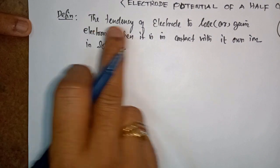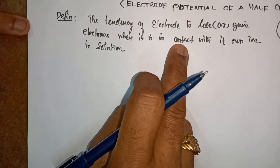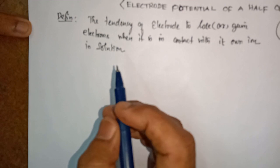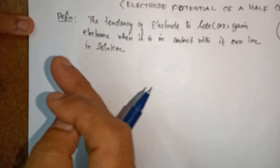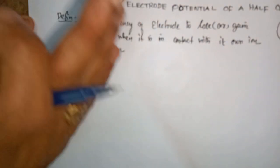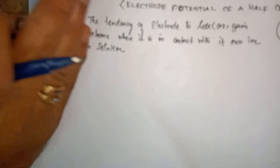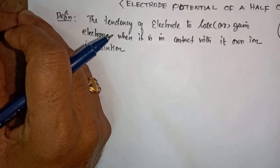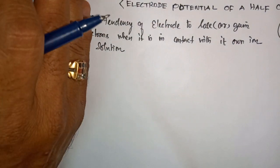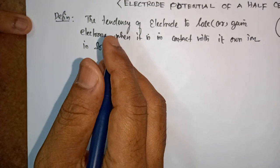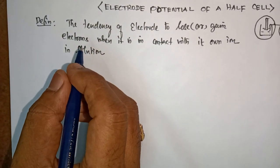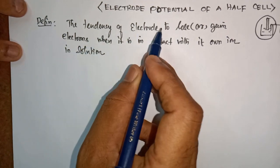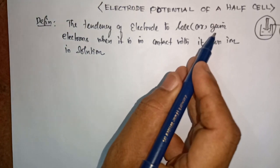Tendency means the ability or capacity of an electrode to lose or gain electrons. Some metals, when they are kept in their metallic solution, may lose electrons. Some metals, when kept in their metallic solution, will gain electrons. That ability to lose or gain electrons is called the tendency of the electrode.